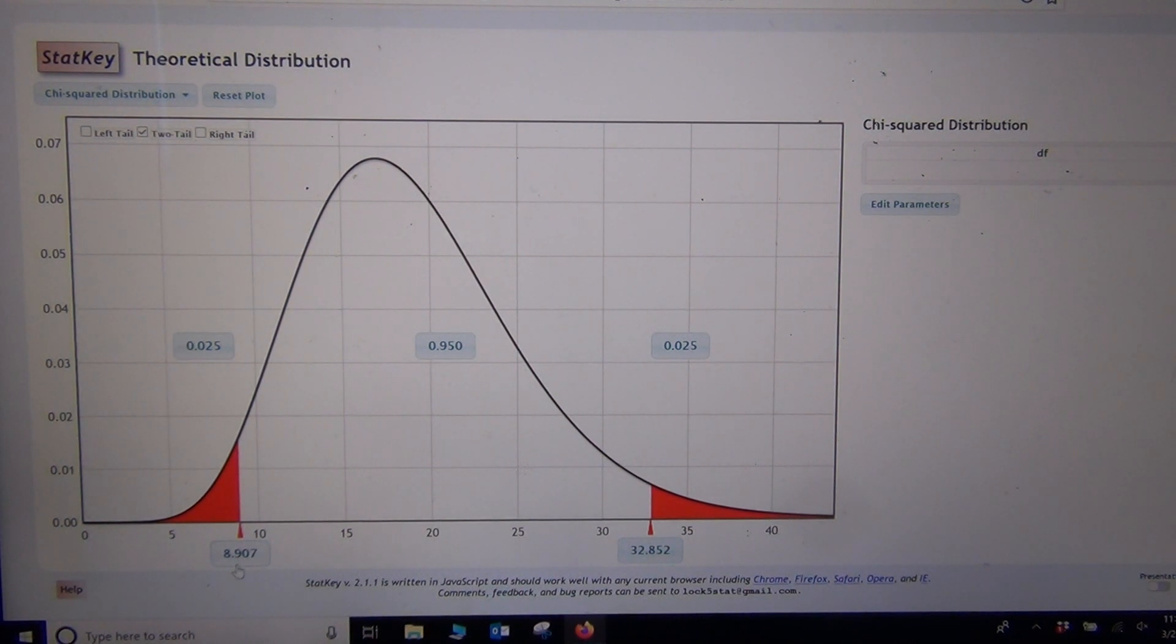So my lower limit critical value is 8.907 for 19 degrees of freedom and 95 percent confidence, and my upper limit would be 32.852, and those numbers would be used in the one population variance confidence interval.